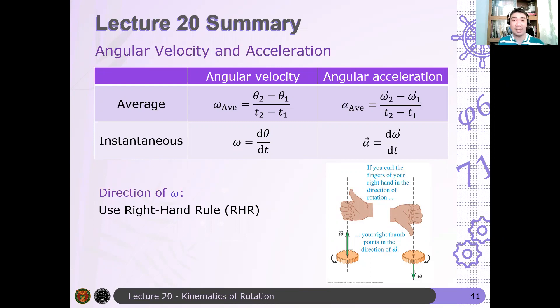Which is angular position. Angular position, we start at some origin. If the rotation is counterclockwise, then the angular position is positive. If the rotation is clockwise, the angular position is negative. And then we can also define average velocity and average acceleration.